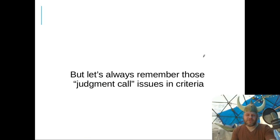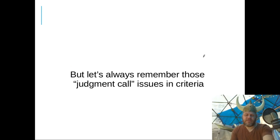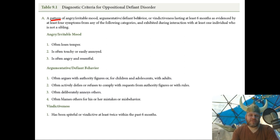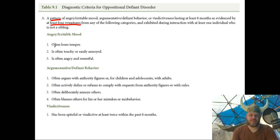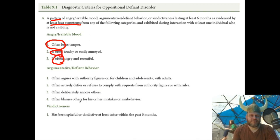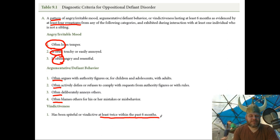Let's look at the criteria from the DSM. A pattern of angry, irritable mood — the criteria require at least four symptoms from any of the following categories. As soon as you say 'at least four from any of the following categories,' that's a lot of combinations. Here's the problem: 'often' — what is often? Once a day? Once every five minutes? That's a judgment call. Finally, vindictiveness requires at least twice within the past six months — that's concrete and workable. But this 'often' business is wishy-washy.